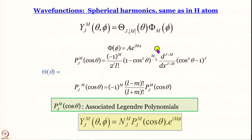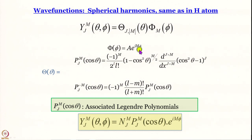Capital M arises from the solution of the phi-dependent part of the equation. The phi function turned out to be A multiplied by e to the power iMφ — what A is will be worked out in the assignments. M stands for the z-component of angular momentum, and its allowed values are 0, ±1, ±2, and so on.